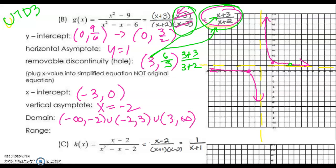And then the range — we have to also include the hole. So it's from negative infinity up to the horizontal asymptote, which is at 1, union with 1 up to the y-coordinate of the hole, which is 6/5 — because that's not on our graph — and union with 6/5 to infinity.